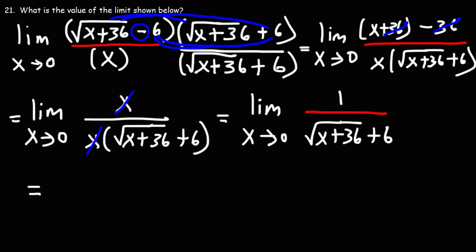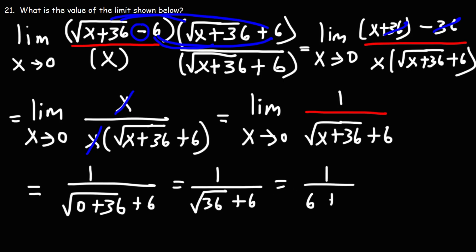So now at this point, we could use direct substitution. We can replace x with 0. And so we'll have 1 over the square root of 36 plus 6. The square root of 36 is 6. 6 plus 6 is 12. So the final answer will be 1 over 12.